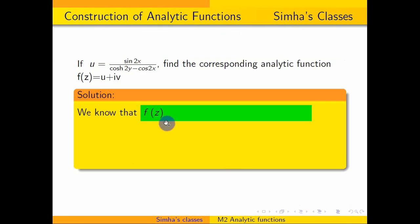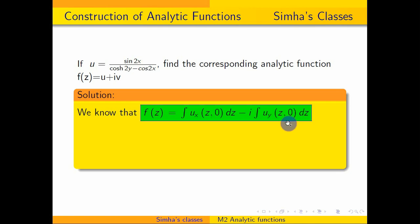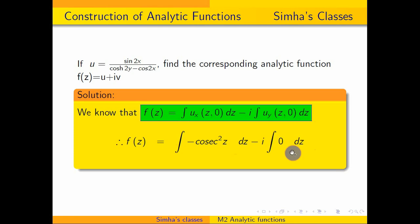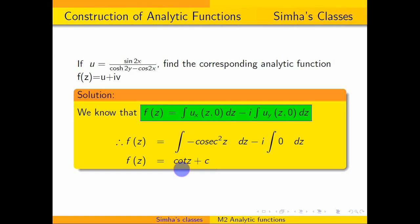Now applying the Milne-Thomson formula to construct the analytic function: f(z) equals the integral of ux(z, 0) dz minus i times the integral of uy(z, 0) dz. This becomes the integral of minus cosecant squared z dz, minus i times the integral of 0 dz. The integral of minus cosecant squared z is cosecant squared z — with minus into minus giving positive — so f(z) equals cot z plus c, the integrating constant. This is the answer to the problem, and this is the way we can construct the analytic function.